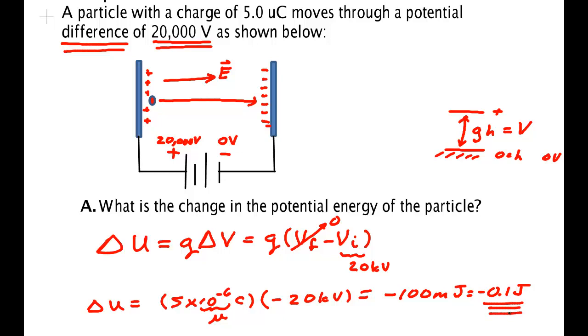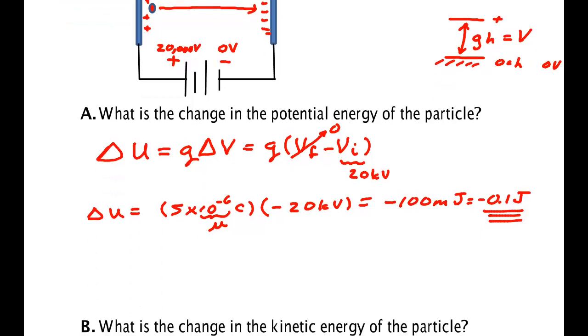Get used to working with these SI units rather than converting them all the time into their exponential notation. So the potential energy goes down. This is much the same way as a ball drops and the potential energy goes down. Now the potential energy goes down here. This is a conservative force.